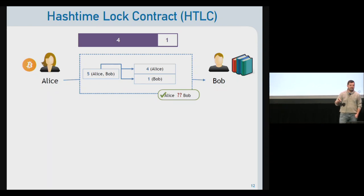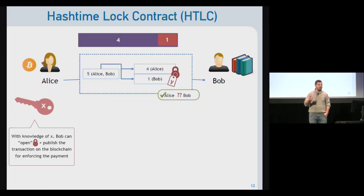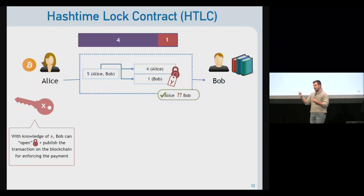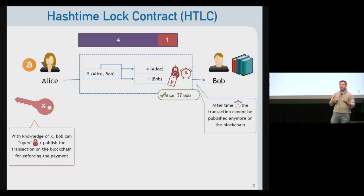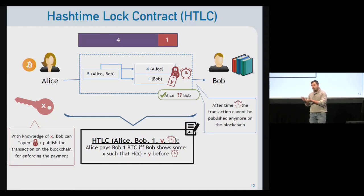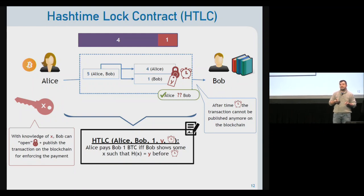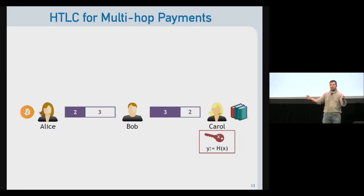The Lightning Network tackles atomicity by including more conditions on the payment itself. If Bob receives such an off-chain payment, he can put it on the blockchain not only with his signature, but also by solving a cryptographic challenge: given a hash value Y, he must come up with a preimage X. A timelock is also added, after which Bob can no longer use the transaction. This is denoted as: Alice pays Bob one coin if and only if Bob shows X such that X is a valid preimage of Y before some timeout expires. Several such hash time-lock contracts (HTLCs) can be concatenated to route a payment from sender to receiver.